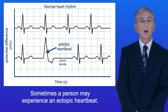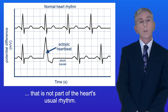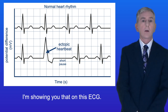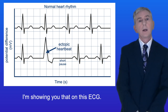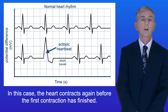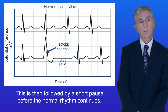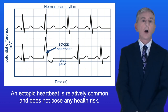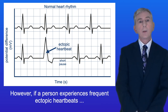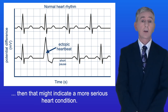Sometimes a person may experience an ectopic heartbeat. An ectopic heartbeat is an extra heartbeat that's not part of the heart's usual rhythm, and I'm showing you that on this ECG. In this case the heart contracts again before the first contraction has finished. This is then followed by a short pause before the normal rhythm continues. An ectopic heartbeat is relatively common and does not pose any health risk. However, if a person experiences frequent ectopic heartbeats then that might indicate a more serious heart condition.